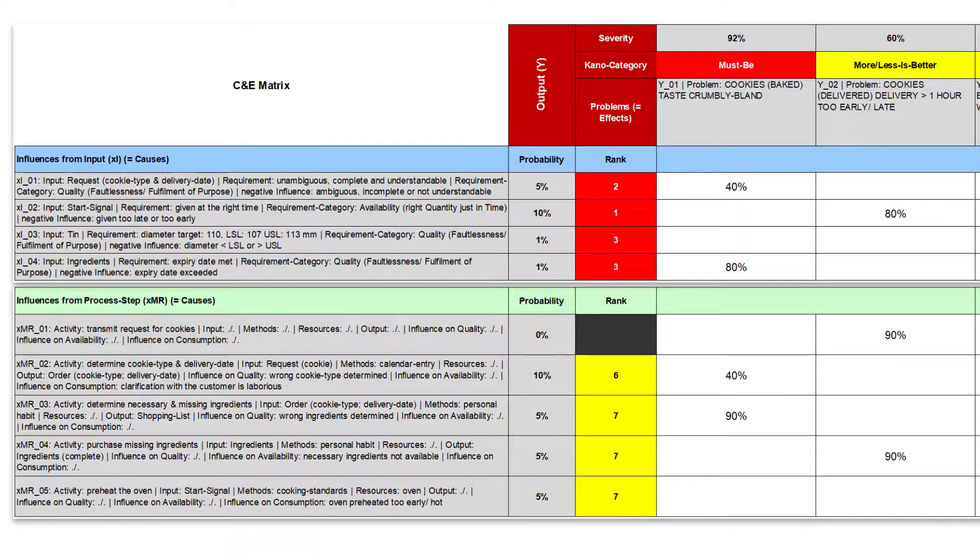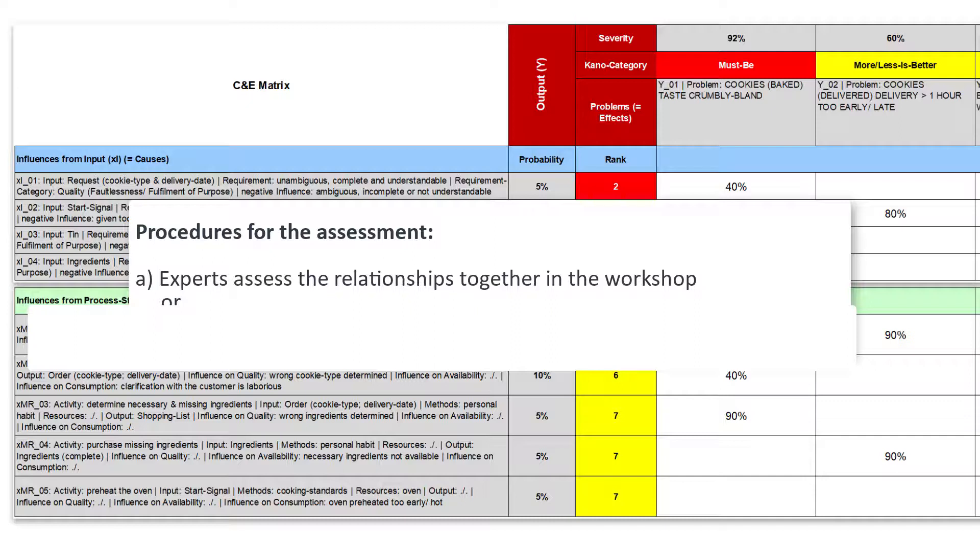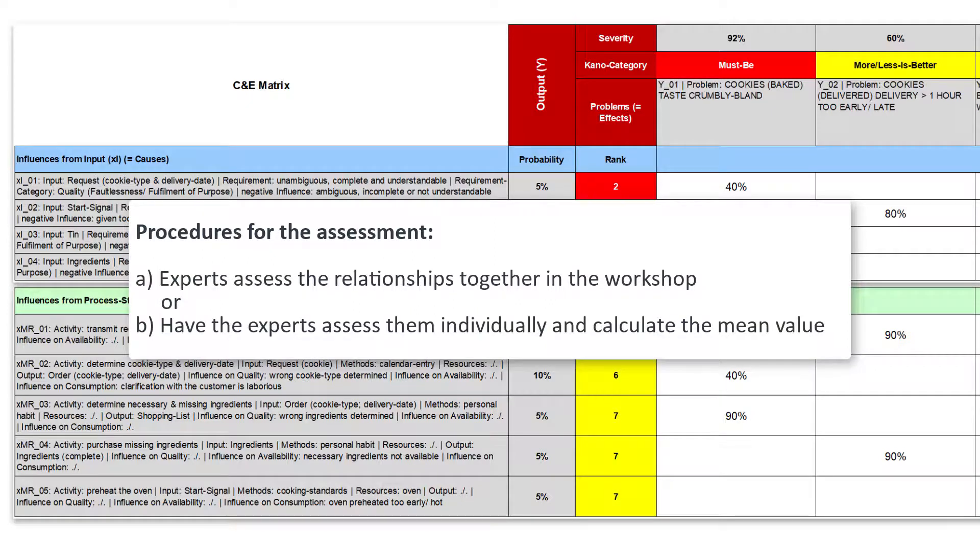If you don't know the strength of the influences yourself, then you should involve the experts again. I have had good experiences with two approaches. Ask the experts to collectively assess each cell in a workshop, one by one, or let the experts make the assessment independently of each other, and then calculate the mean value for each cell from these individual assessments.